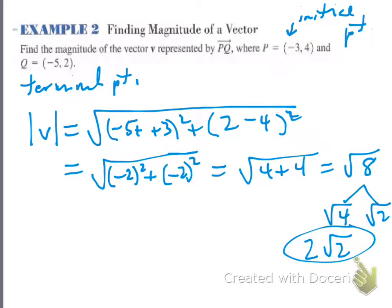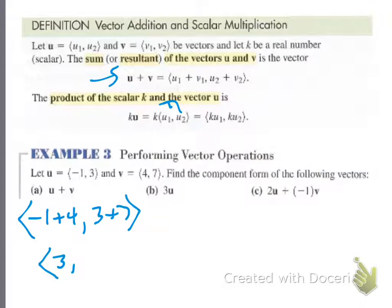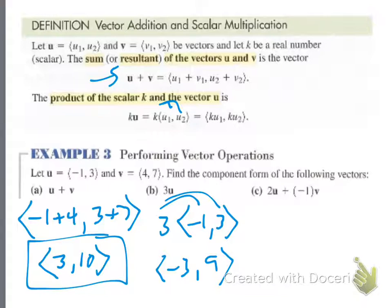Vector addition and scalar multiplication — this next part is easy. Scalar multiplication means a number is placed outside the vector and you distribute it. When you add vectors, you just add the corresponding components. For example, u + v: add the x's (−1 + 4) and the y's (3 + 7), giving ⟨3, 10⟩. For 3u, where u = ⟨−1, 3⟩, distribute the 3 to get ⟨−3, 9⟩. If they combine both, do the scalars first, then add the corresponding components.